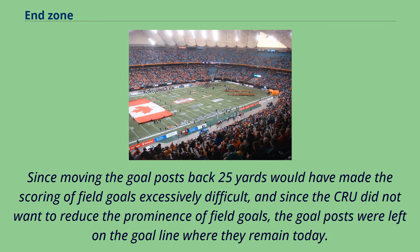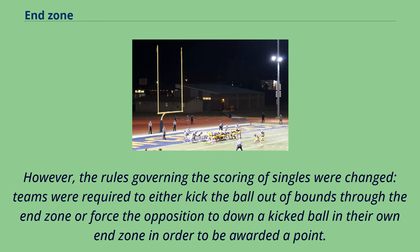Since moving the goal posts back 25 yards would have made the scoring of field goals excessively difficult, and since the CRU did not want to reduce the prominence of field goals, the goal posts were left on the goal line where they remain today. However, the rules governing the scoring of singles were changed: teams were required to either kick the ball out of bounds through the end zone or force the opposition to down a kicked ball in their own end zone in order to be awarded a point.